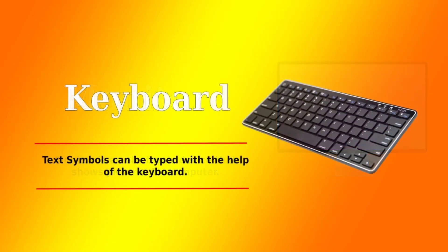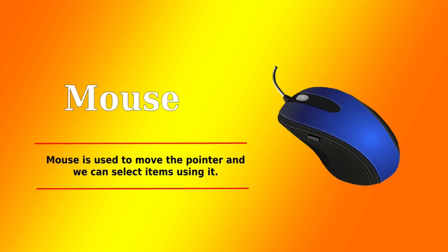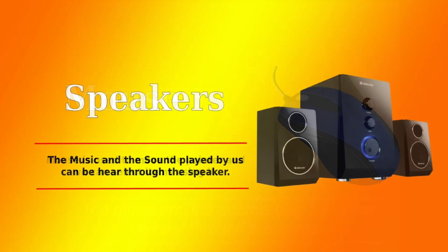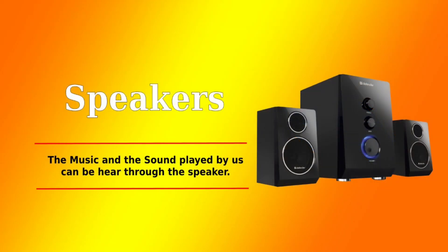Keyboard — text and symbols can be typed with the help of the keyboard. Mouse — Mouse is used to move the pointer. Speakers — music and sounds can be heard through the speakers.